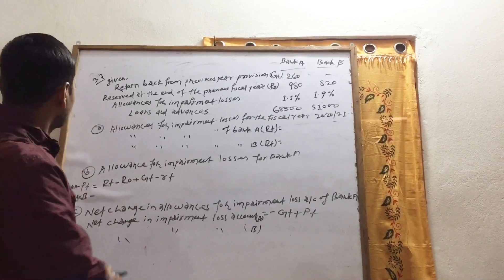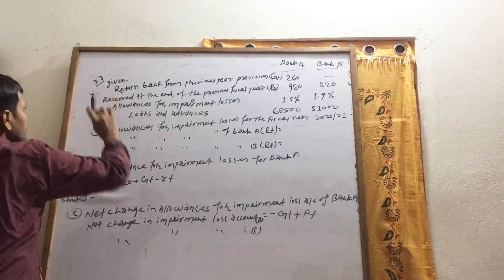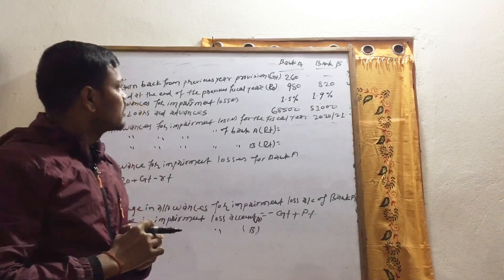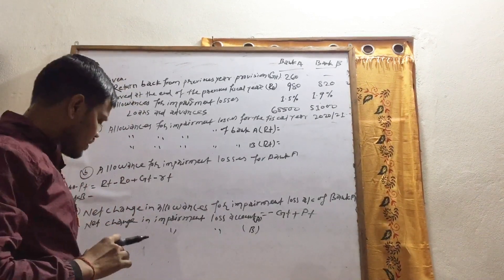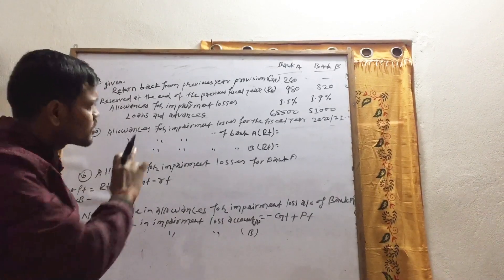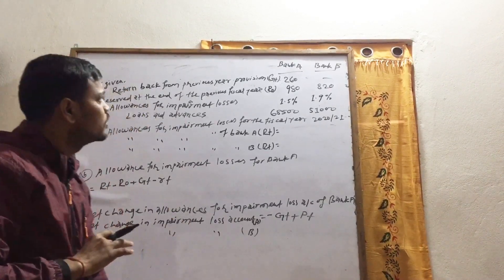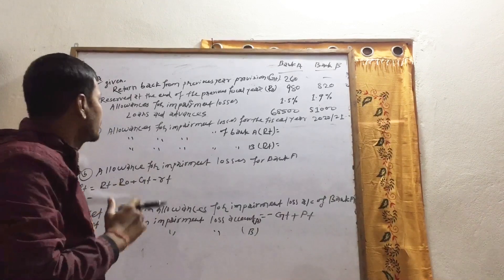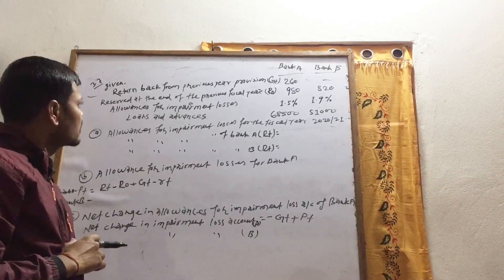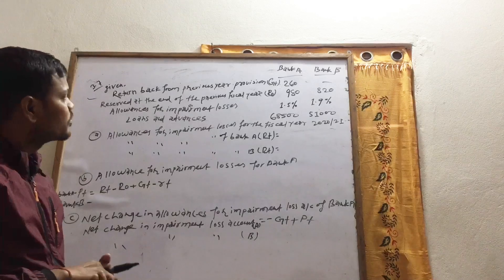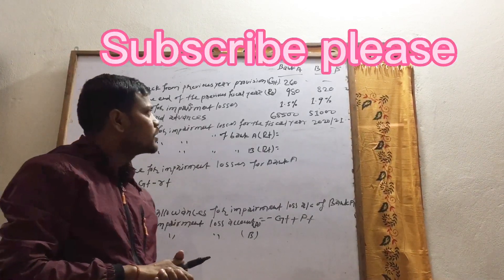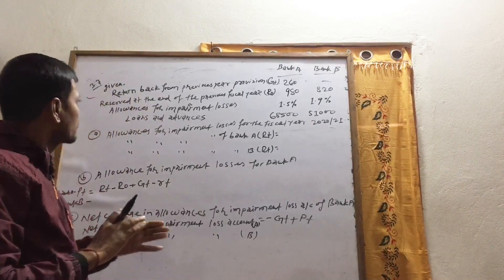The bank is given information: the return back from the previous year — provision. Bank A is $260 million, Bank B is $820 million. At the end of the previous fiscal year, Bank A is $980 million and Bank B is $820 million.